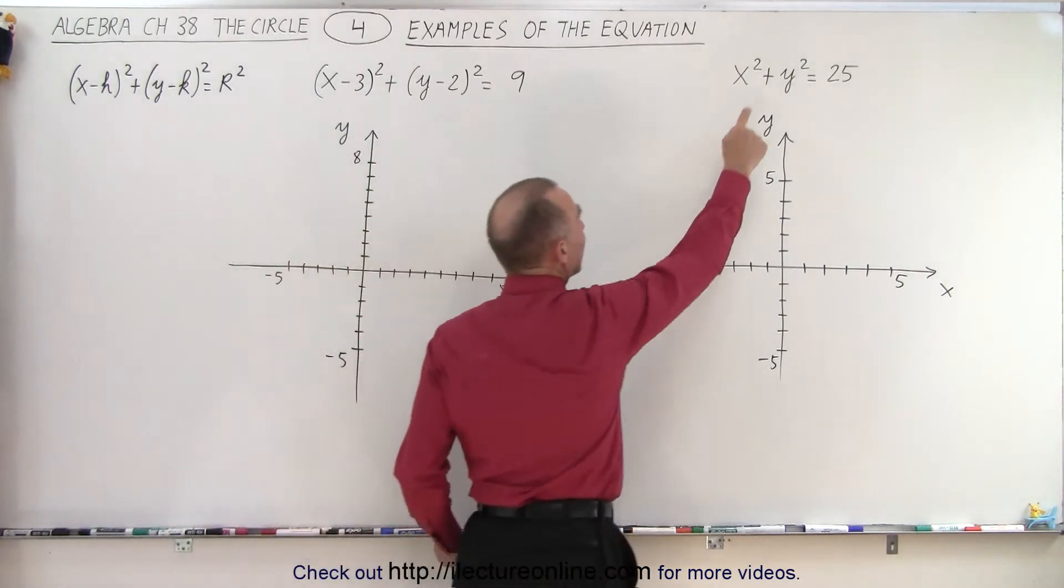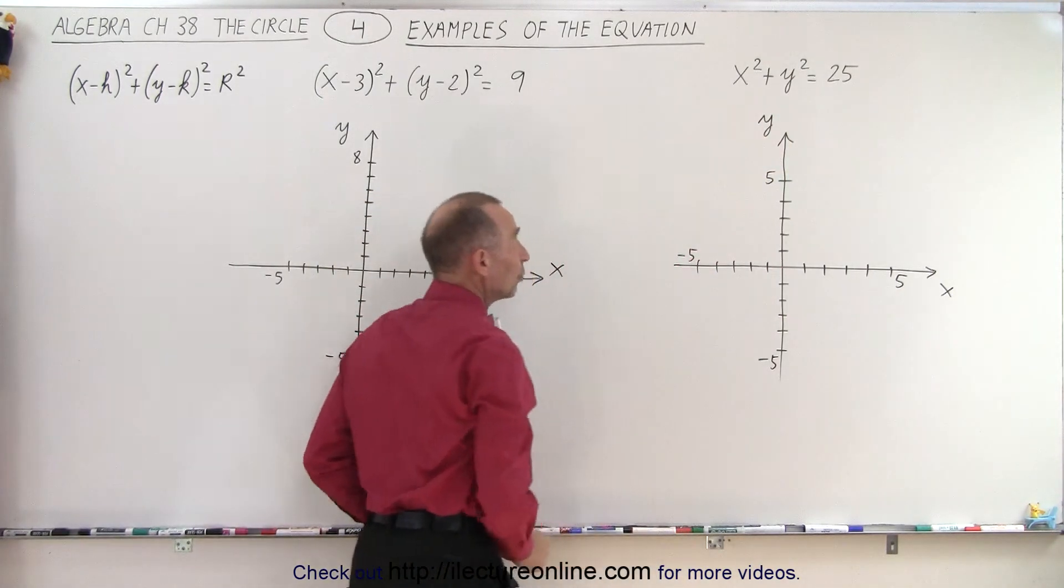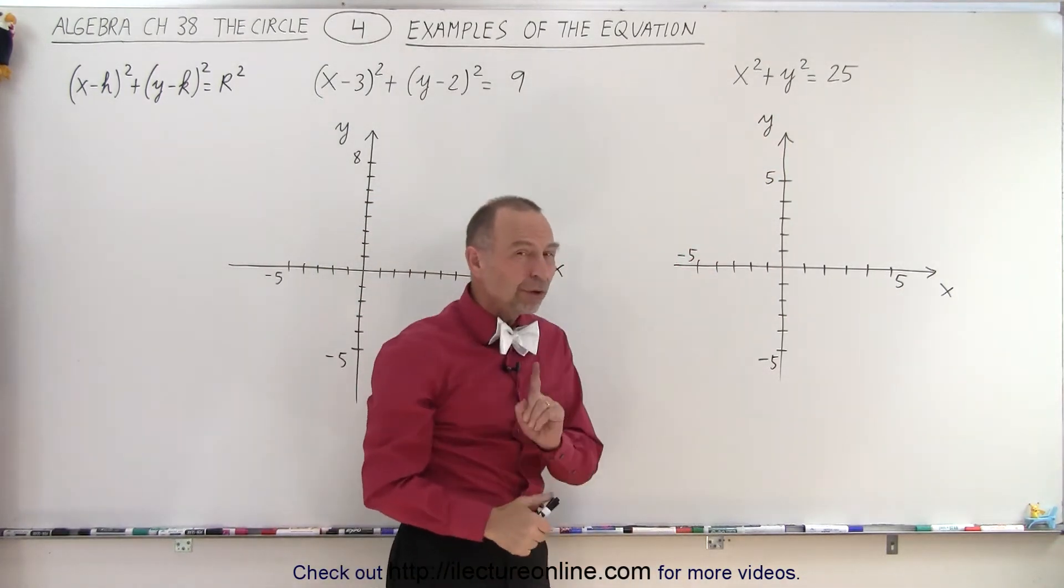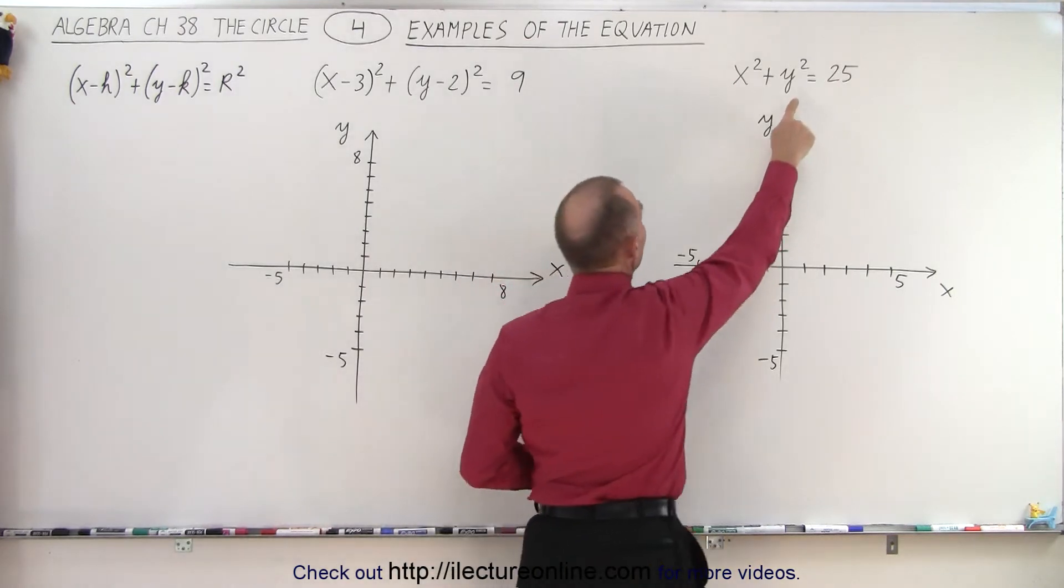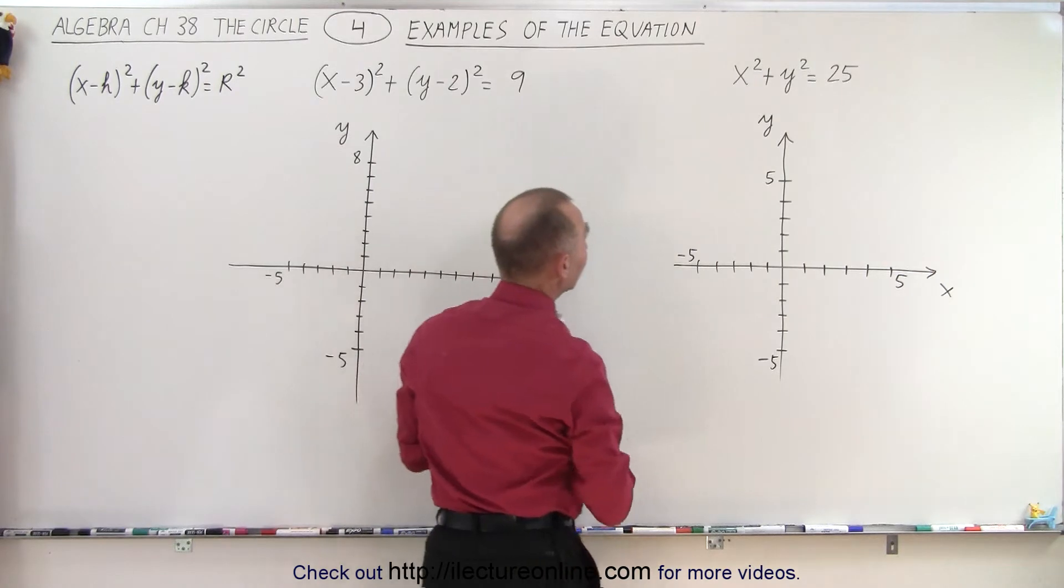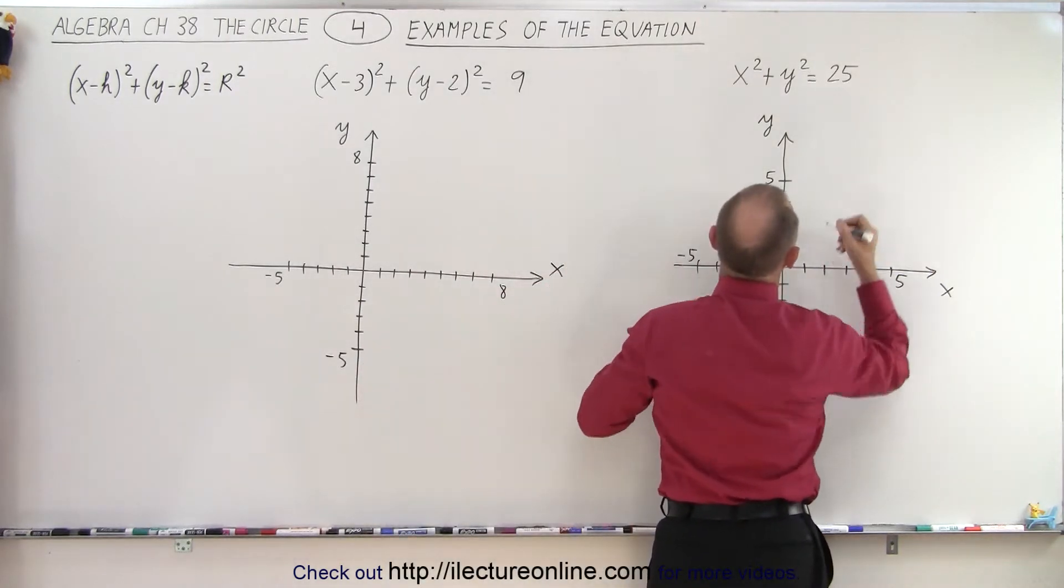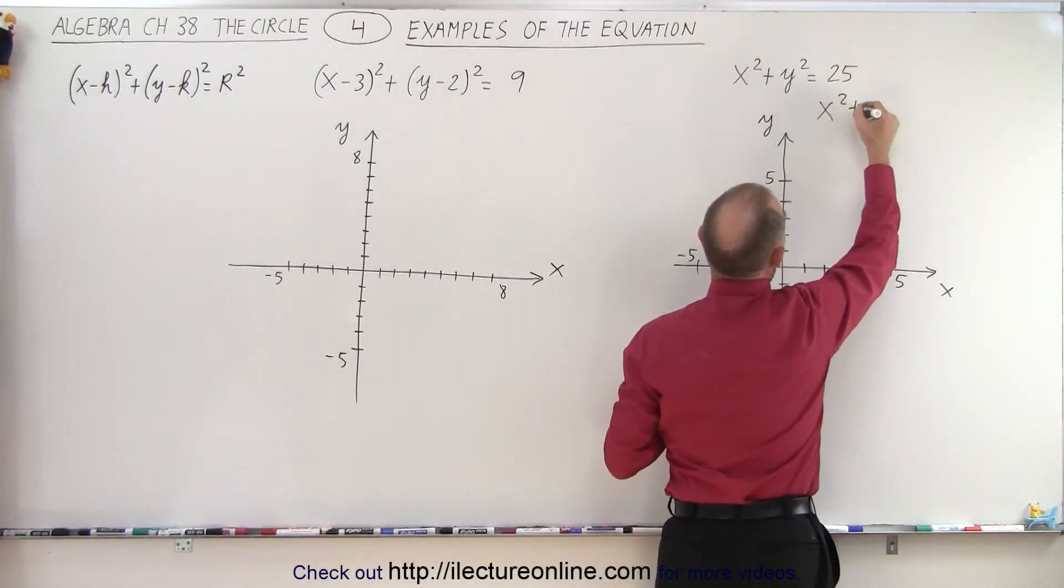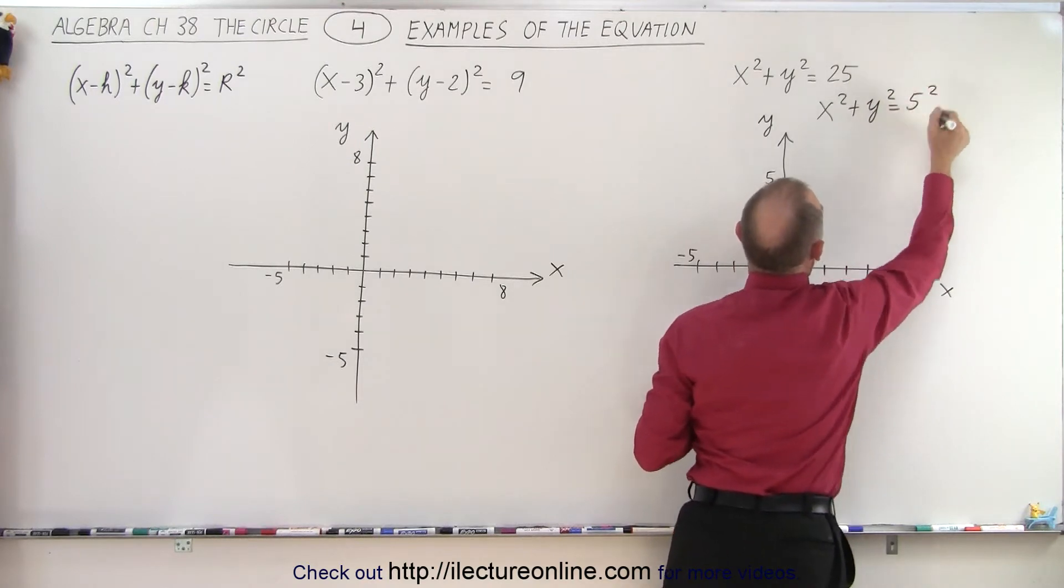How can you tell? Well, there's no h and k, or h and k in this case will be equal to zero. But it's always a good idea to rewrite this into the format with the radius squared on the right side. So we should probably rewrite this as x squared plus y squared equals 5 squared.